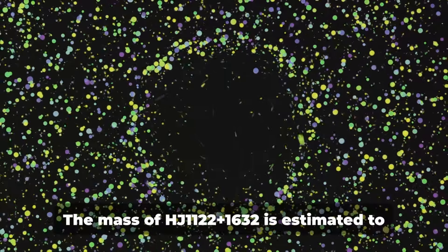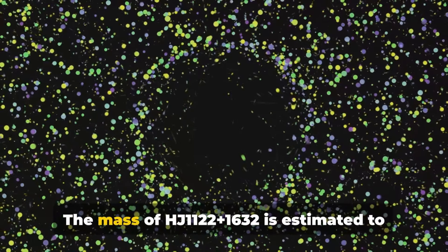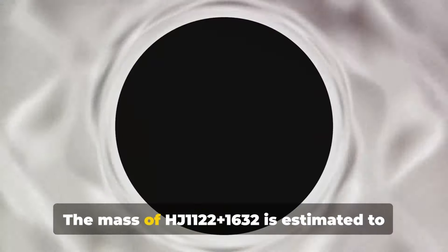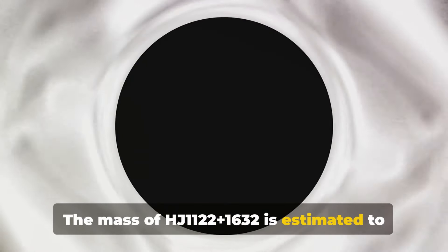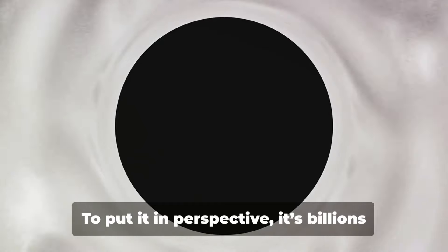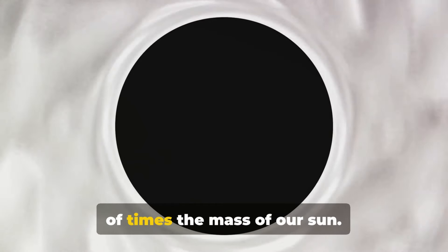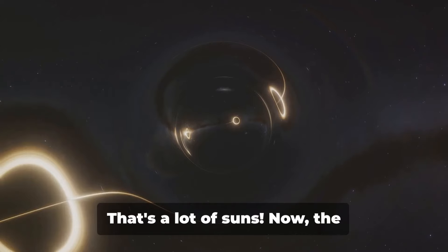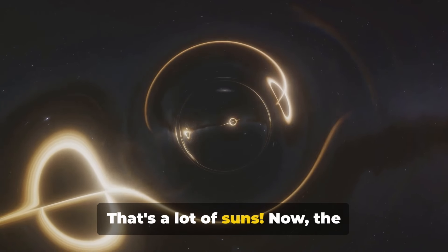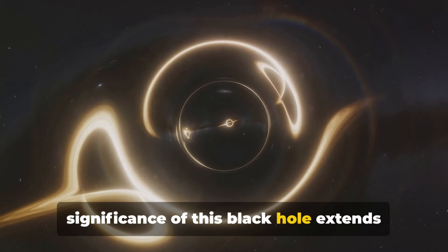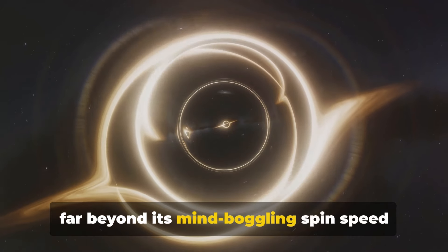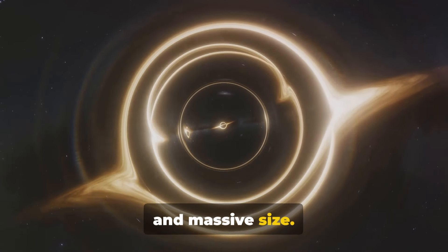And when we say extraordinary, we're not exaggerating. The mass of HJ 1122 plus 1632 is estimated to be in the billions. To put it in perspective, it's billions of times the mass of our sun. That's a lot of suns.